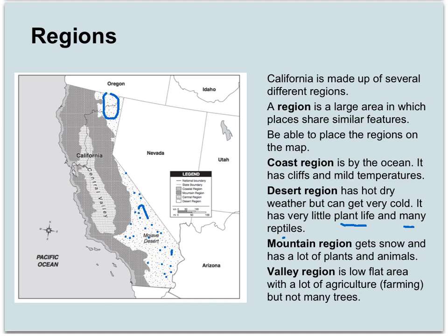Mountain regions get snow and they have a lot of plants and animal life. The mountain regions can be identified by all of this area here — this is mountainous. We have some mountains that kind of come along near the coast too. And then the valley region is a low, flat area with a lot of agriculture, a lot of farming, and not many trees.